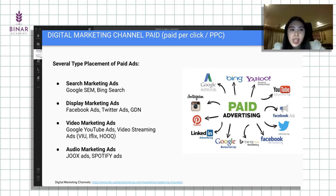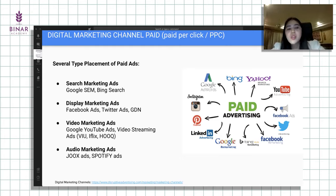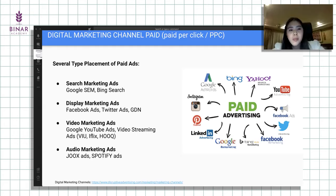Kalau secara garis besar, placement paid ads bisa dibagi empat bagian. Ada search marketing ads, ini fokus di search engine marketing, yang bisa dilihat di Google search paling atas biasanya berbayar, itu SEM. Bing search juga. Yang kedua itu display marketing ads, display berupa static image, bisa platformnya Facebook ads, Twitter ads. Kalau di Google ada namanya Google Display Network. Yang ketiga ada video marketing ads, salah satunya YouTube ads.